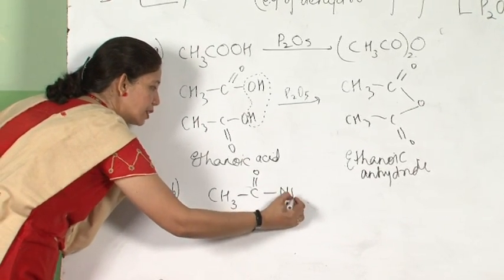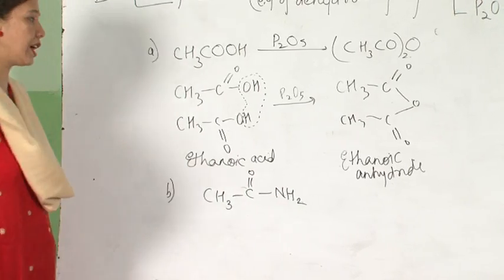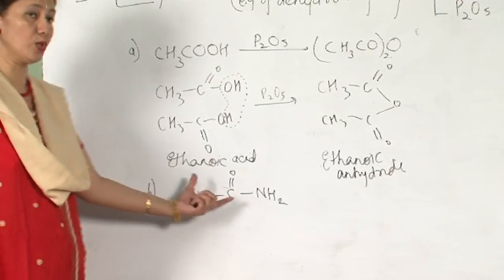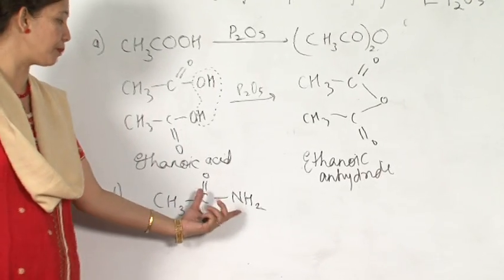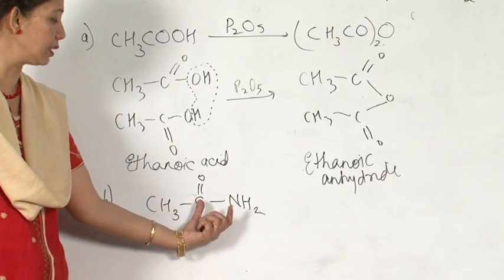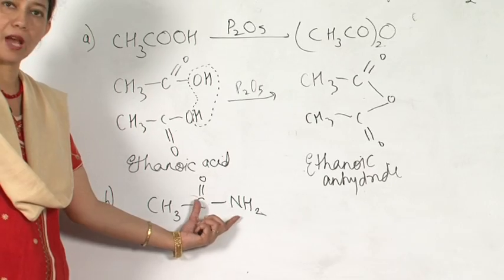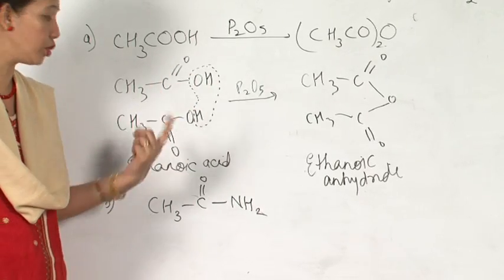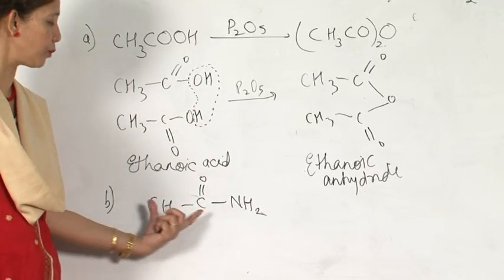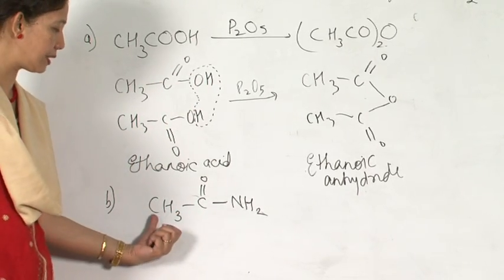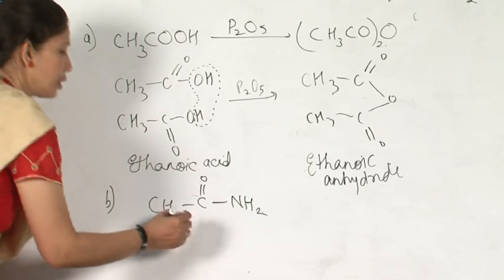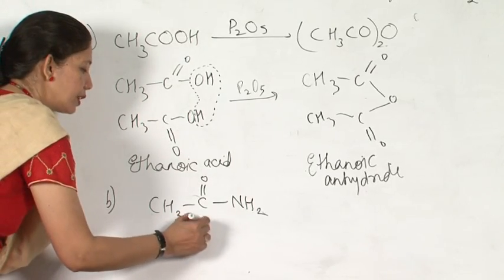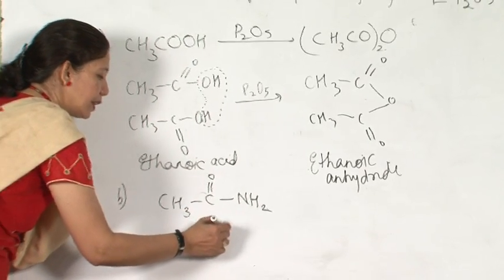I am taking this compound. Once again, try to find out what the name of this compound will be. This is an acid amide. So, alkanamide — two carbon atoms, first and second. So, the name goes here as ethanamide.